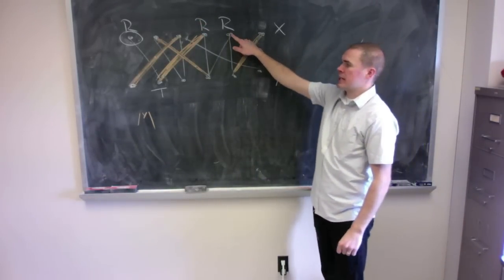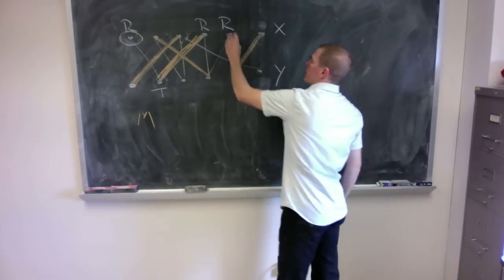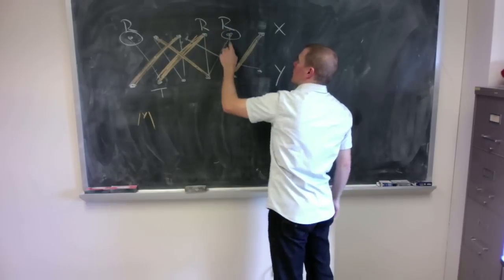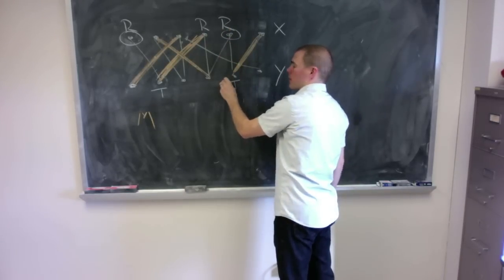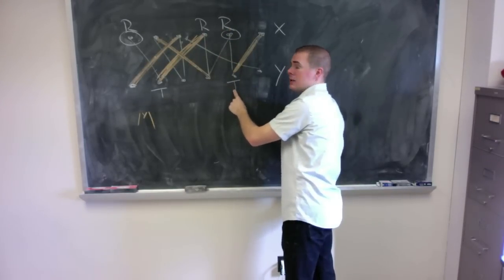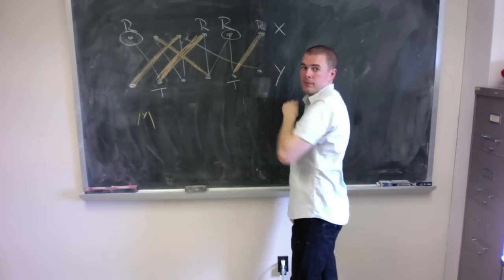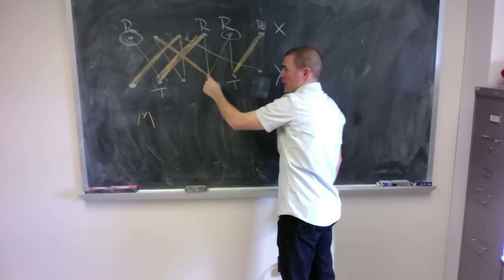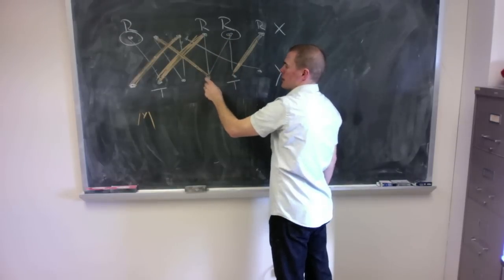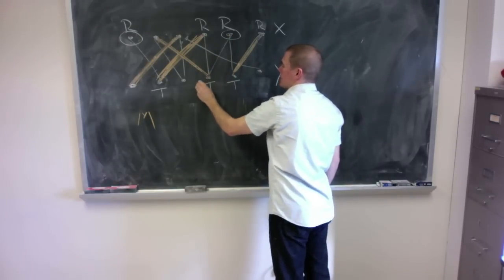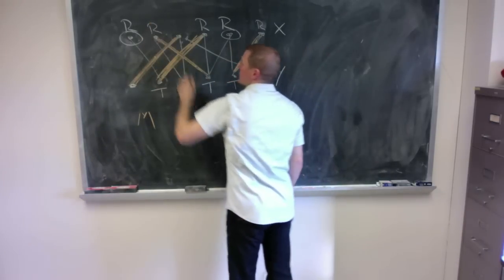Now let's consider this vertex that was added to R earlier. I'm going to mark it, look across, and see a matched vertex in Y, so I put it into T. But it's matched, so I put the matched partner into R. Along the other edge not in the matching, I see this vertex is also not in T yet, but it's matched, so that vertex also goes into R.